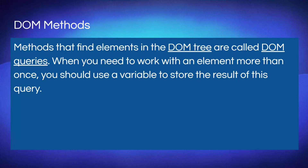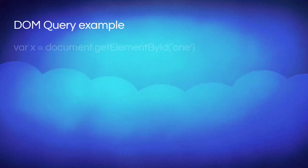Whenever we call things, we use methods. Methods that find elements in the DOM tree are called DOM queries. If I'm looking for something, I'm going to traverse the tree and look for it. For example, if you're looking at a tree that has apples on it and you want to get an apple, you're going to query the tree — give me an apple. When we work with an element more than once, we use a variable to store the result of this query.